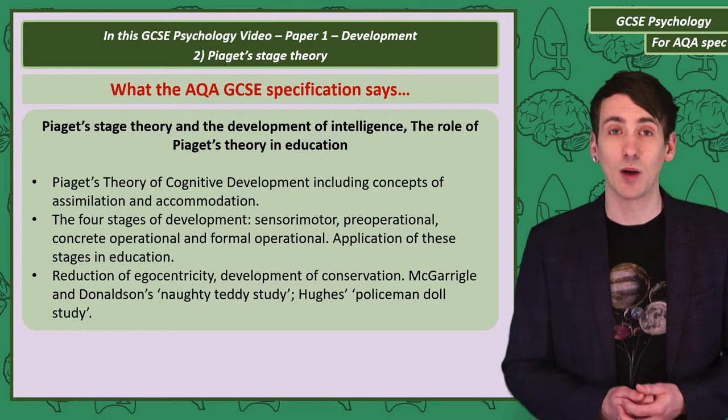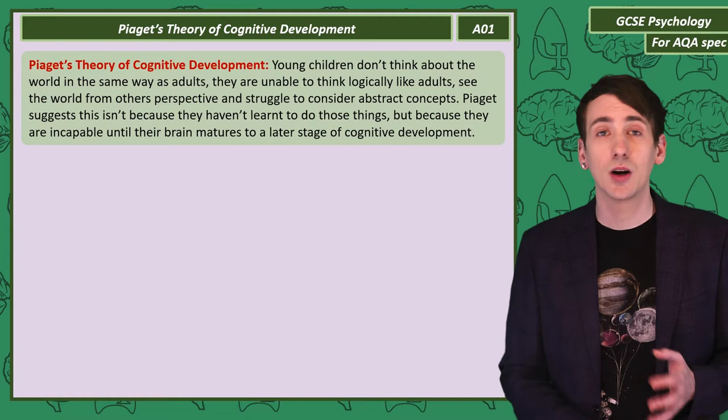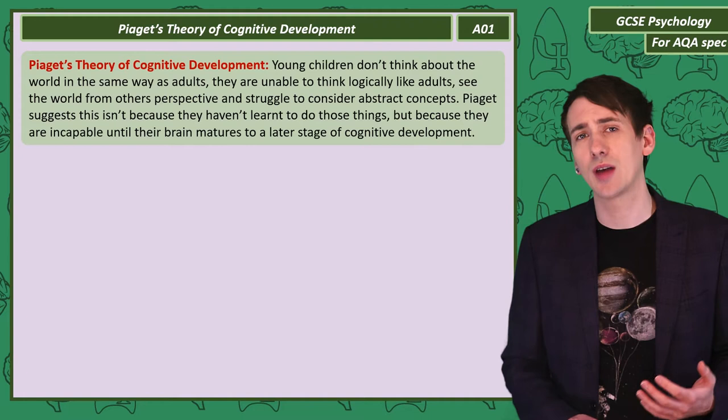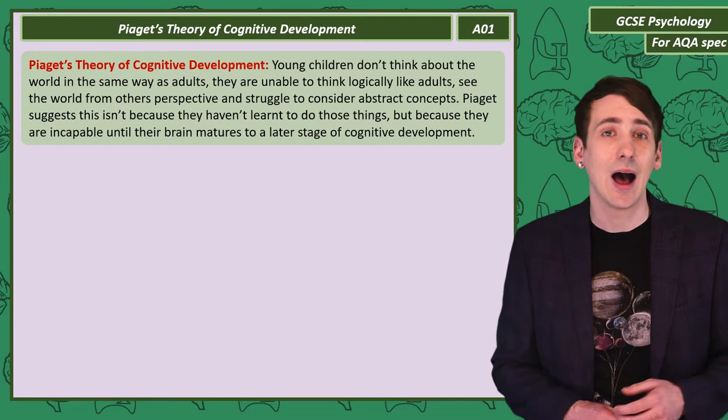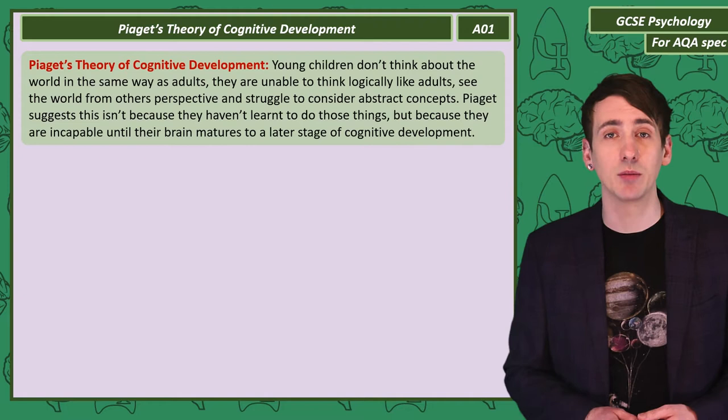Jean Piaget was a famous psychologist in the field of childhood development and he had a theory about how children develop cognitively. Piaget thought it wasn't just that children haven't yet learned how to think about the things adults think about, but that they think in completely different ways. Adults can think logically, can see the world from others' perspectives, and can think about abstract concepts. According to Piaget, children simply can't do those things, because their brains have not yet matured to a stage of cognitive development that allows those kinds of thoughts.